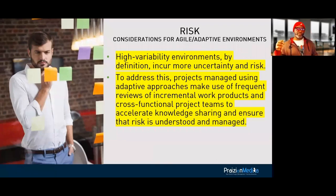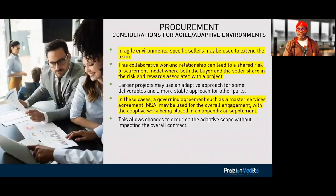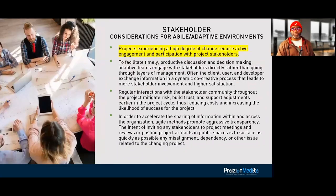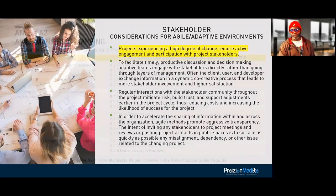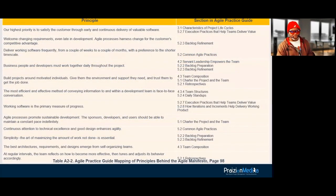We want to catch risks before they become impediments. In the world of procurement, we do MSAs — master services agreements — and we want flexible arrangements, not just fixed. Stakeholder management: business people and developers have got to work together daily throughout the project. Remember, there are tables that show you how the manifesto values and principles are painted throughout the chapters.